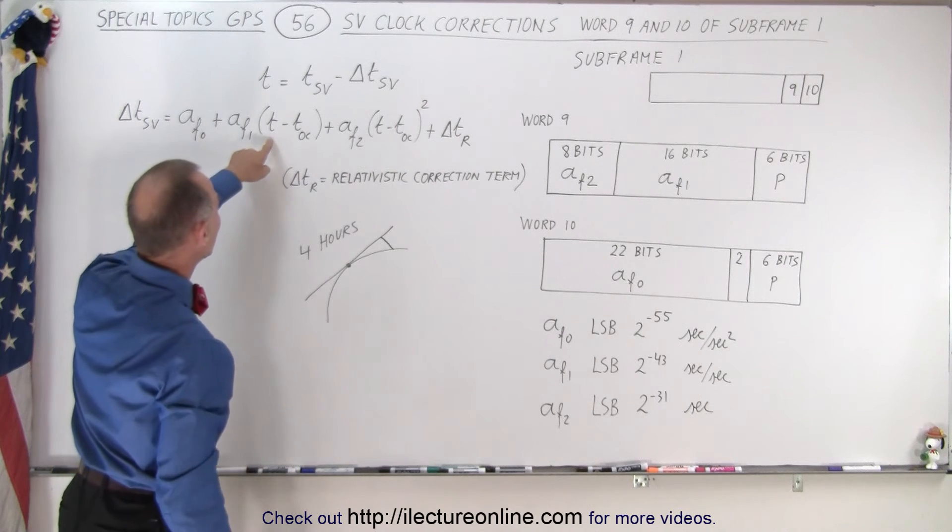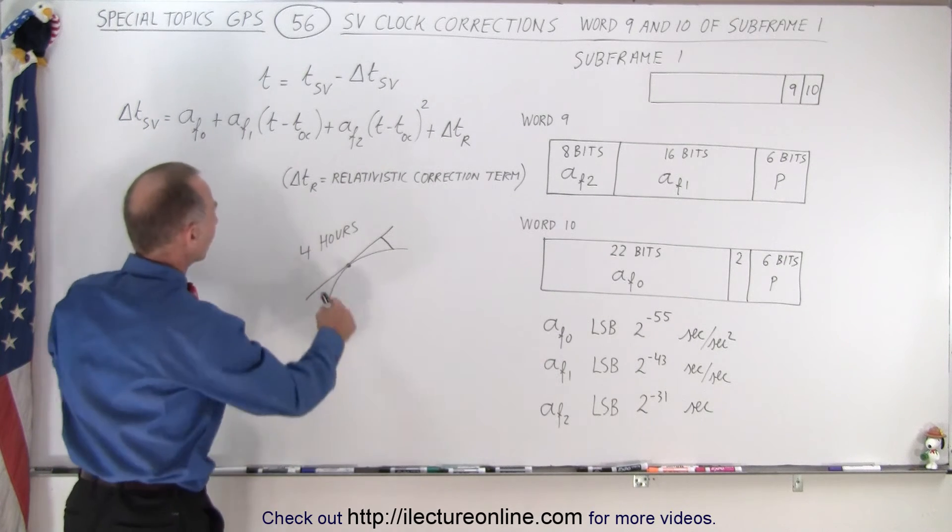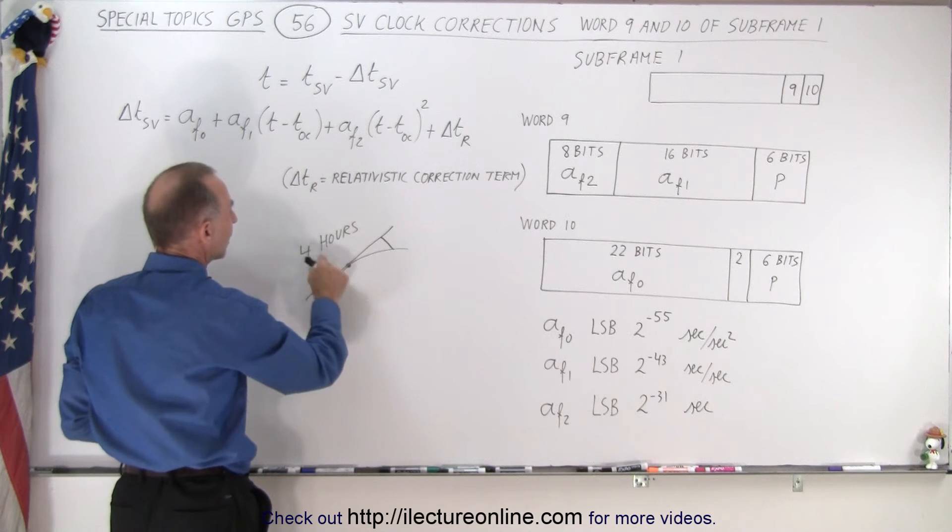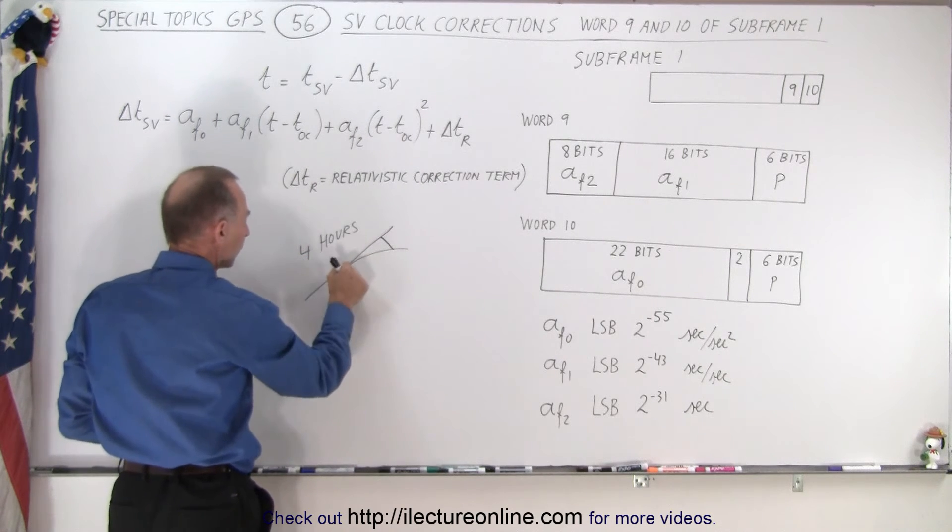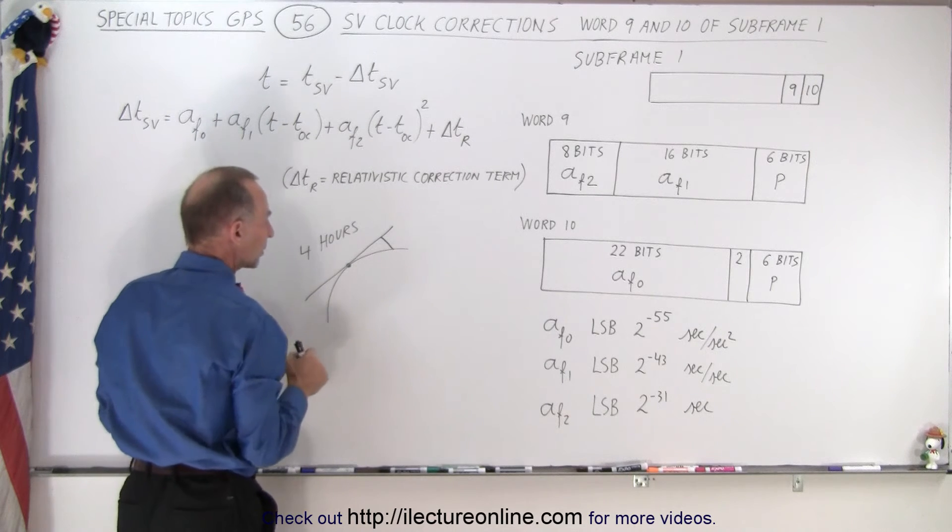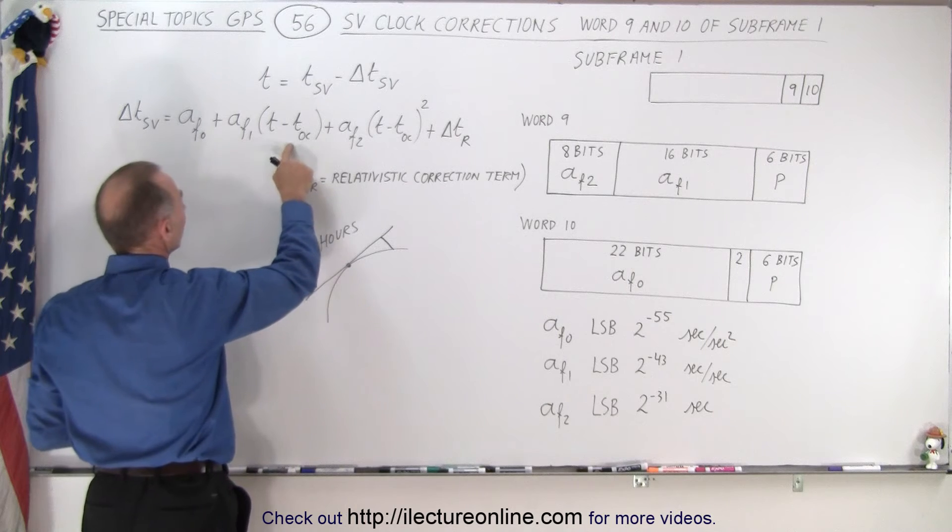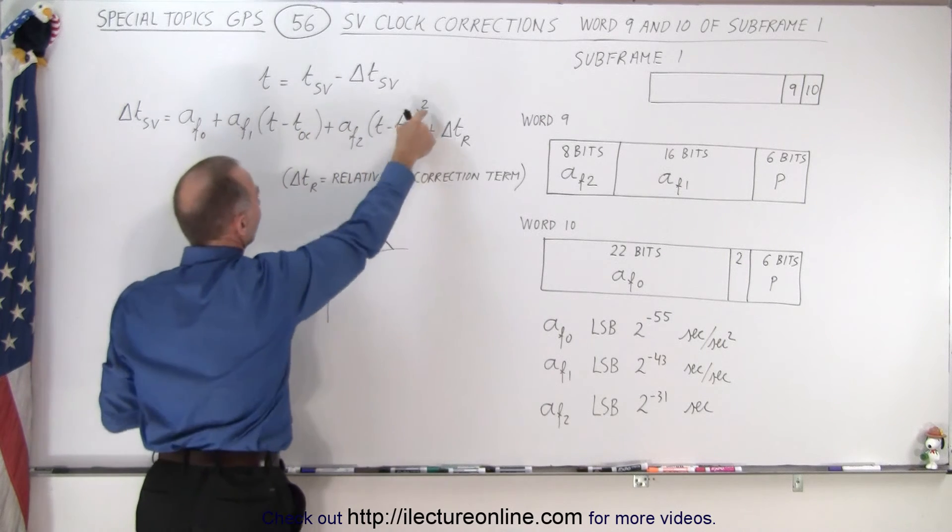But then we take the difference between the time and the TOC wherever we are, so how far off are we from this perfect center of that 4 hour period. And the difference of that time is then either raised to the first power or raised to the second power.